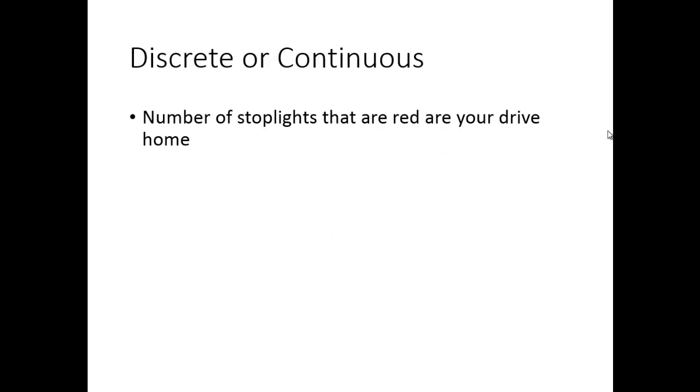Okay, so some examples here of discrete or continuous. What if we look at the number of stoplights that are red on your drive home? So you go for some kind of drive. And you can say the number of stoplights you hit that happen to be red. We're talking about number of. Now I'm going to think of it as either you hit it or you don't. We could define precisely what that means in certain border cases.